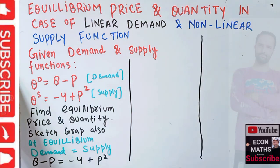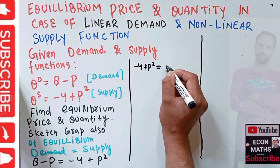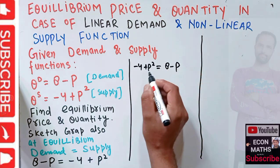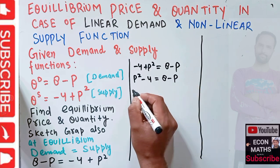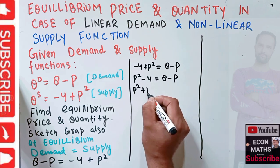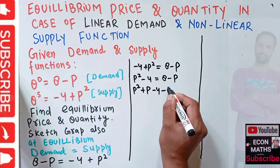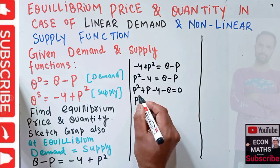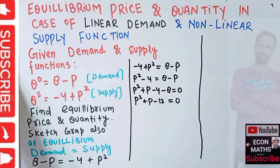We need to solve this equation. So 8 - P = -4 + P², which we can rewrite as P² - P - 4 - 8 = 0, giving us P² + P - 12 = 0. This is a quadratic equation we need to solve.